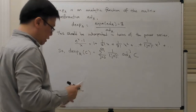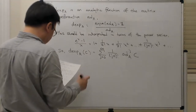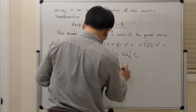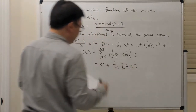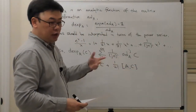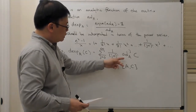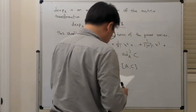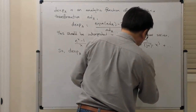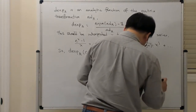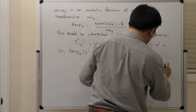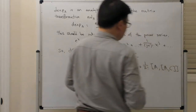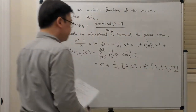We can write down the first few terms of this. It looks like C plus 1 over 2 factorial times the commutator of A and C — because, recalling the adjoint representation and its linearization, that corresponds to the matrix commutator — plus 1 over 3 factorial times the commutator of A with the commutator of A and C.